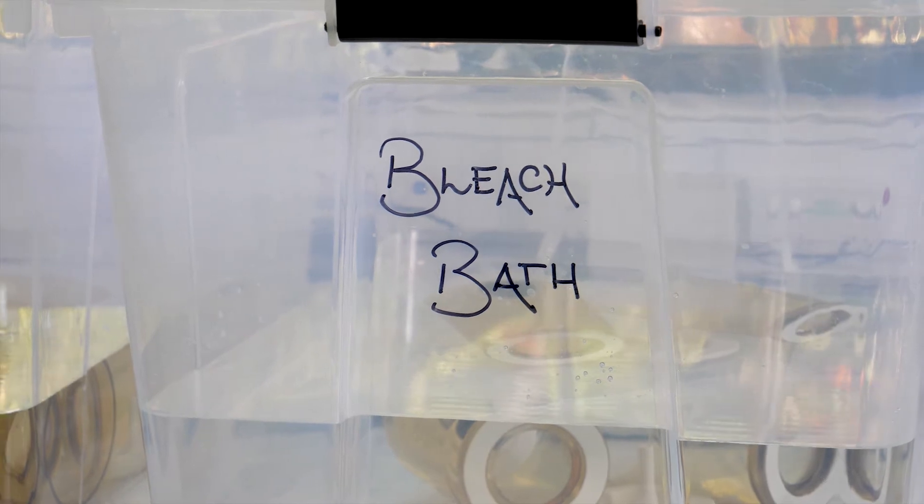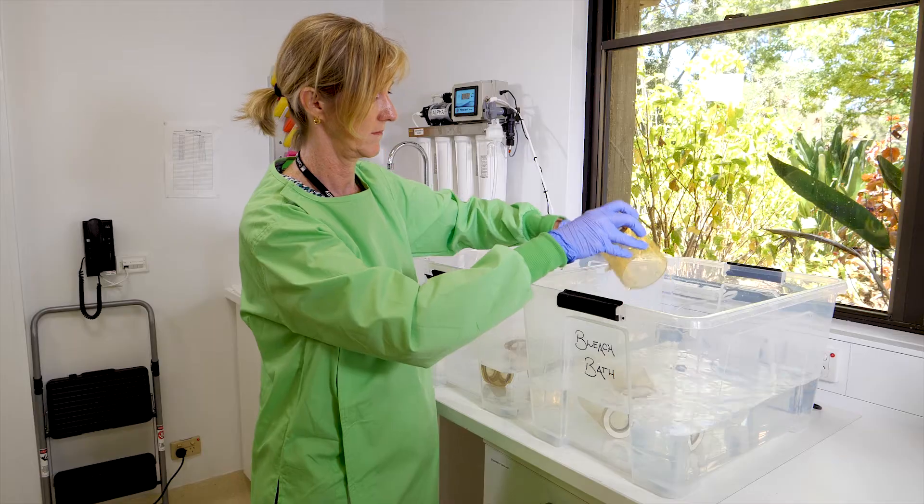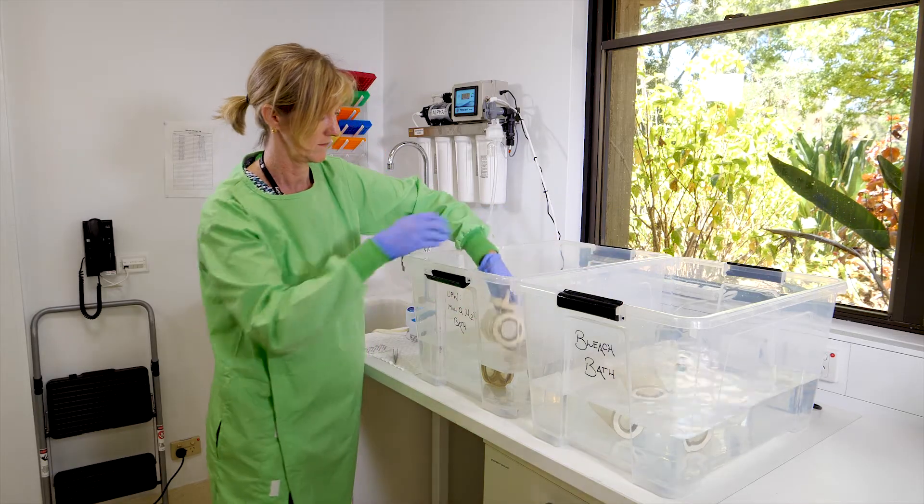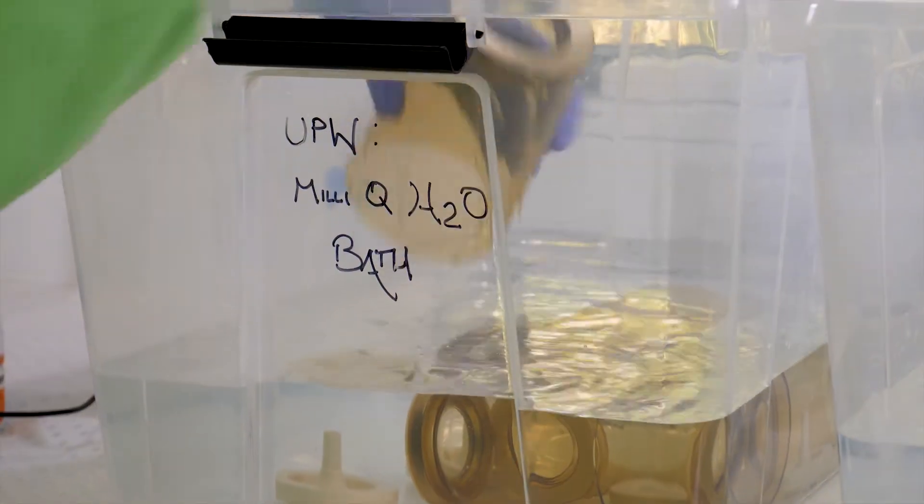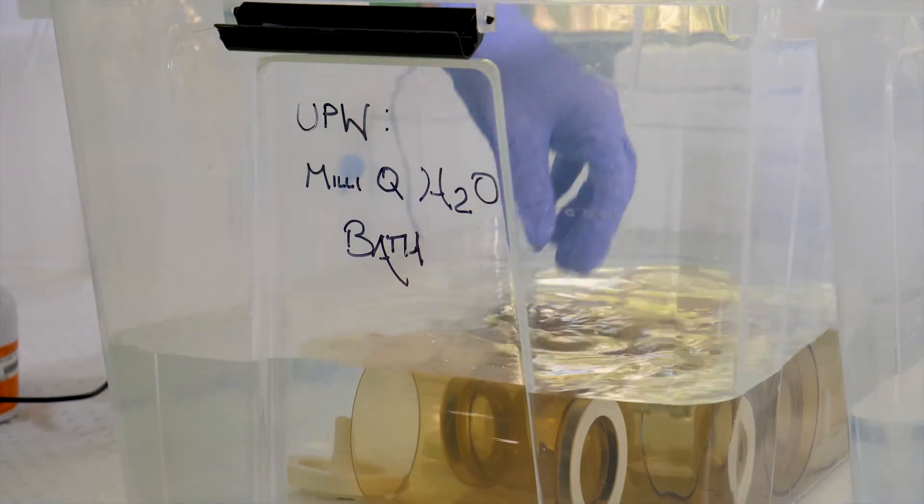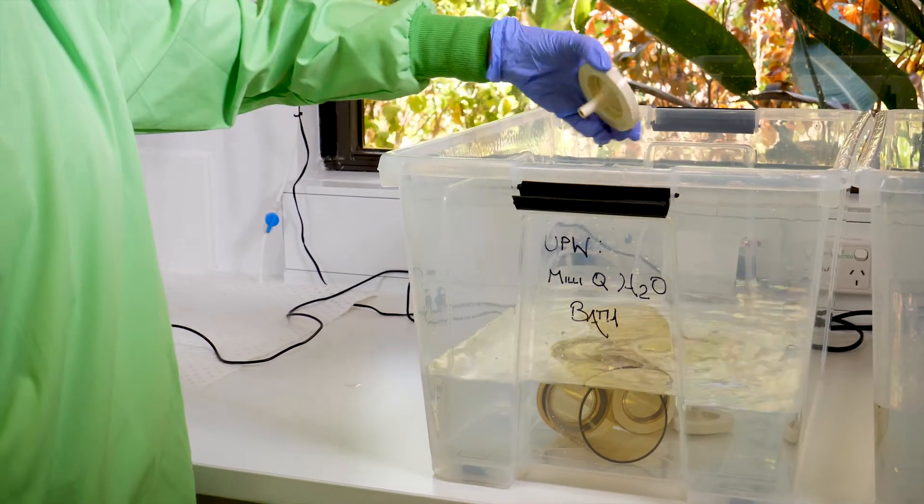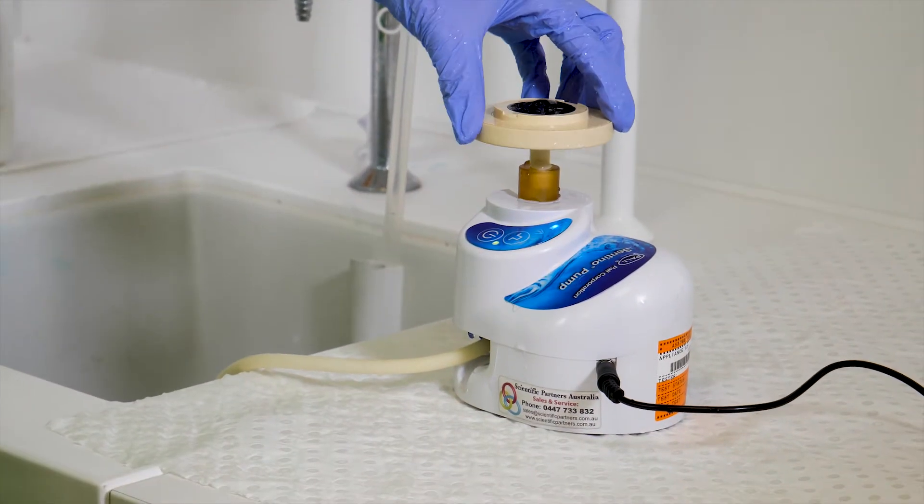After 15 minutes of the funnel and the filter base soaking in the bleach, remove the items and transfer them over to the rinse water to remove residual bleach from the apparatus. This needs only to be a rinse, but make it thorough enough to ensure the bleach is gone or it may degrade the DNA in the sample. Connect the filter base to the pump system via the tubing connector as shown.